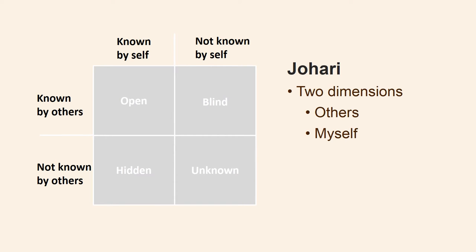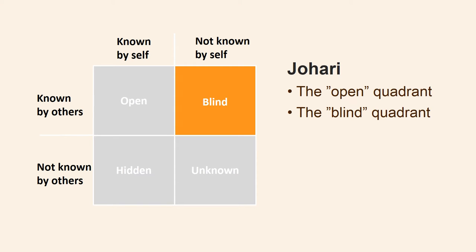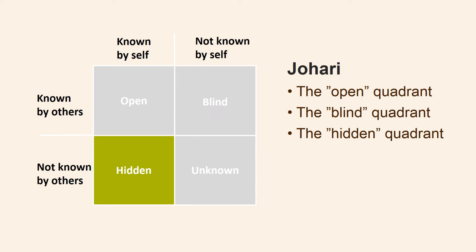Out of the two dimensions — myself and the others — appear four quadrants. The lines dividing the four quadrants are like window shades, which can move as an interaction progresses. The open quadrant is what is known by myself and known by others. The blind quadrant is what is known by others but not known by myself. The hidden quadrant is what is known by myself but not known by others.